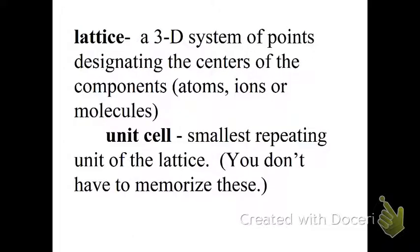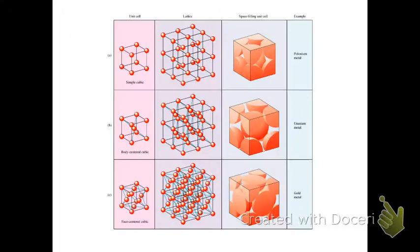We have our lattice in our solids, which is a 3D system of points designating the centers. They can be atoms, ions, or molecules. Then we have the unit cell, which is the smallest repeating unit of the lattice. You do not have to memorize these, but you do need to be aware of them. We have a simple cube, a body-centered cube, and a face-centered cube.